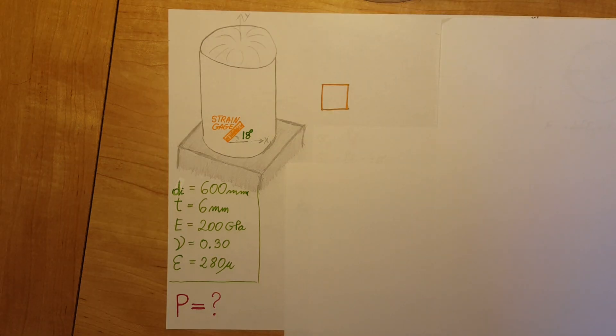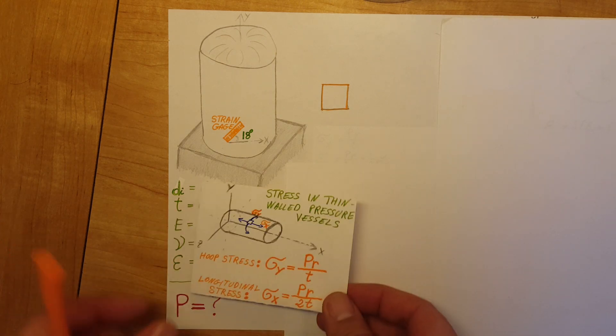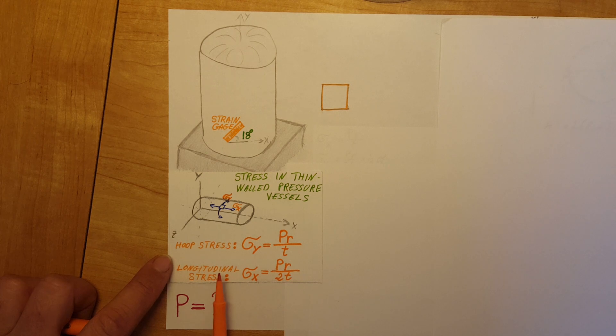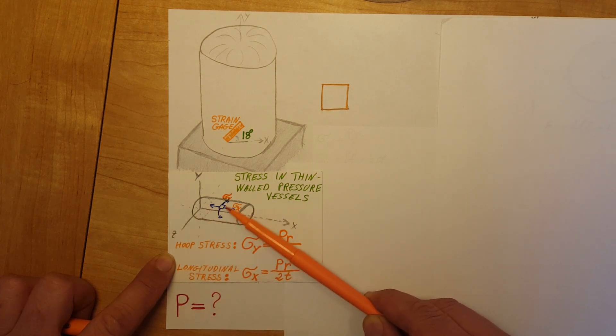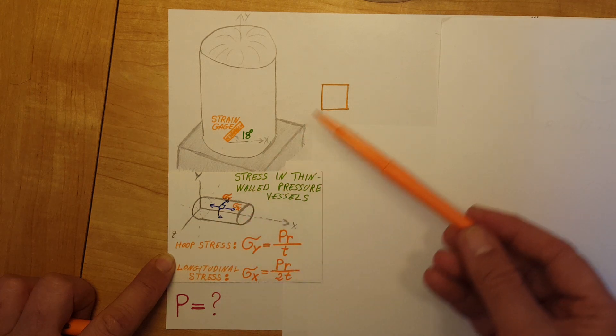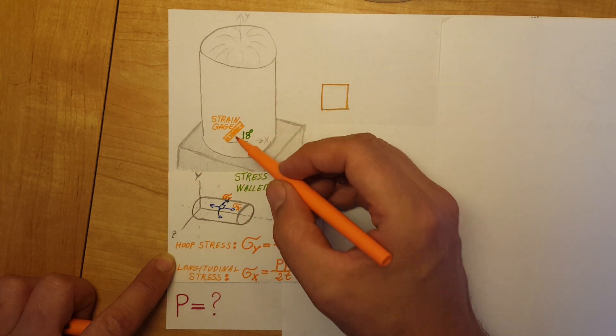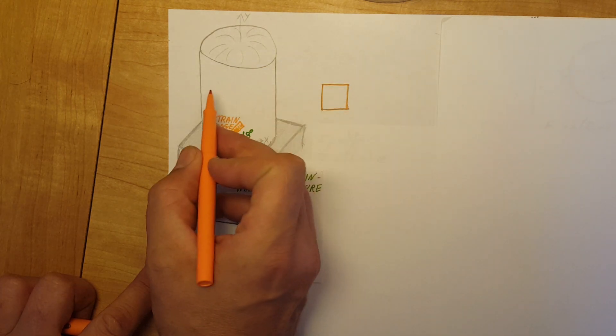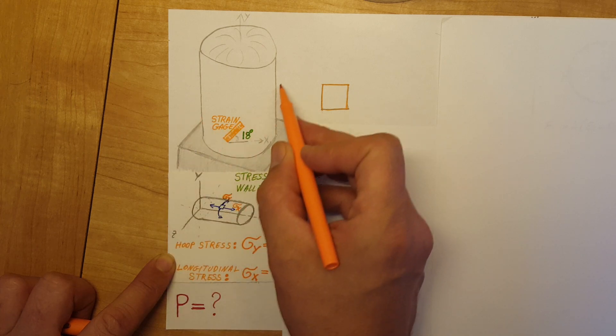First, let's draw up the state of stress at the location of the strain gauge so we can have a better view of what's happening. Here are our formulas for thin-walled pressure vessels. We know we're dealing with hoop stress and longitudinal stress. I'm going to transfer this over here—we have longitudinal stress this way and hoop stress this way.